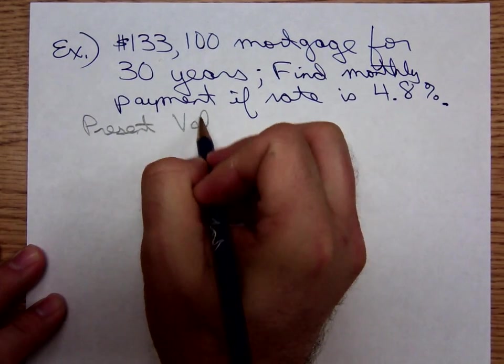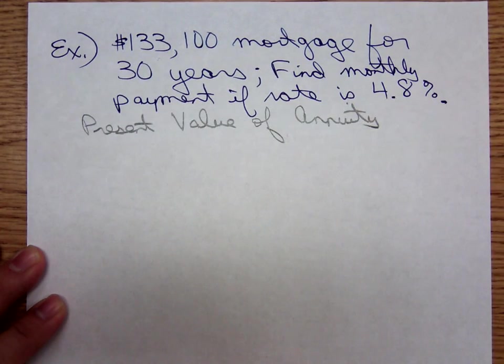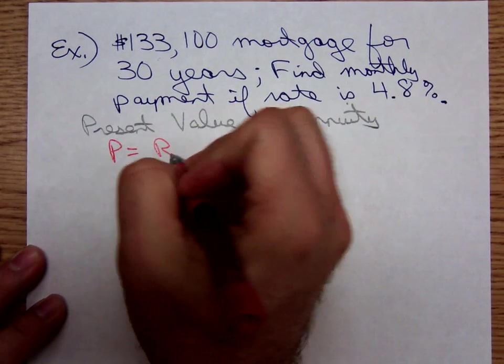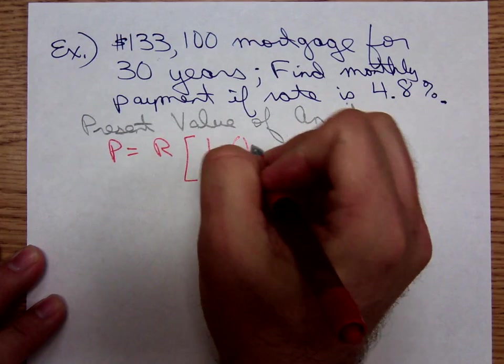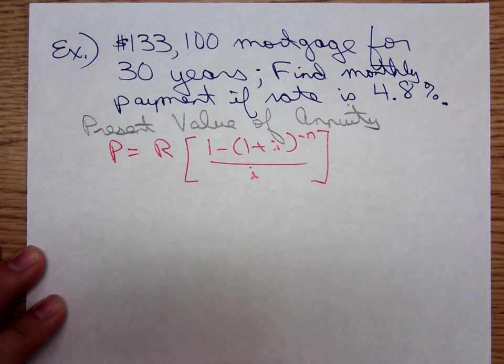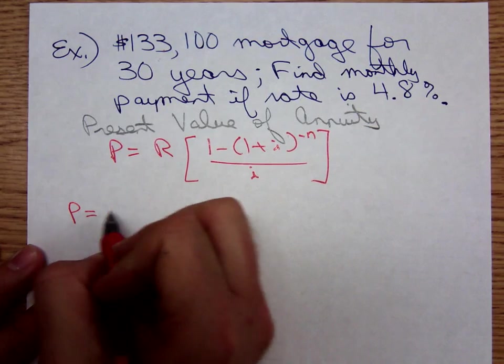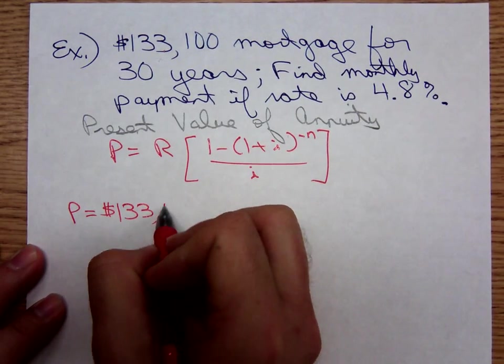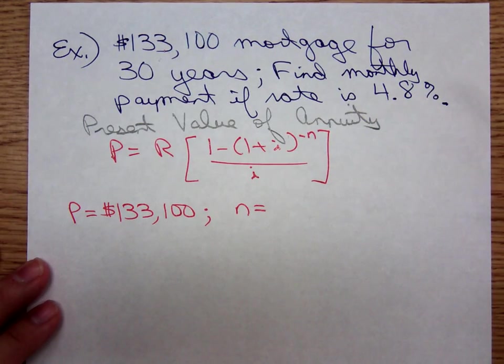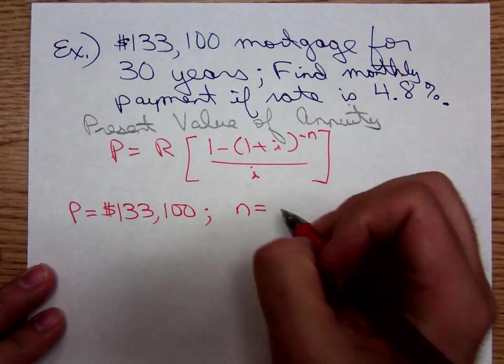The lump sum is in the present and we recall the present value of the annuity formula. Realize P, the present value, that's that $133,100. And how many payments are they going to have over the 30-year life of this mortgage? They're making monthly payments for 30 years: 12 times 30 is 360.